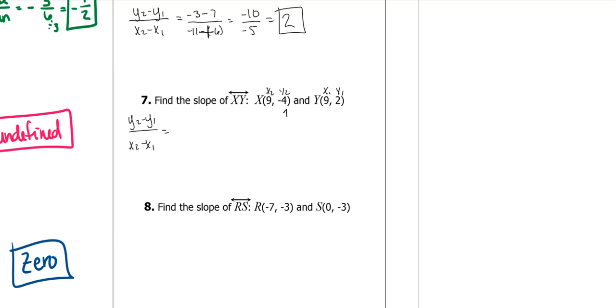All right. y2 is negative 4 minus y1 is 2. x2 is 9 minus x1, which is also 9. This gives me negative 6 over 0. And we cannot have 0 in a denominator, so it is undefined.